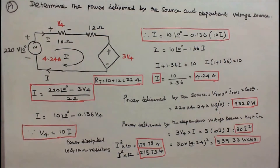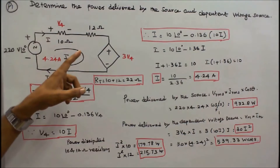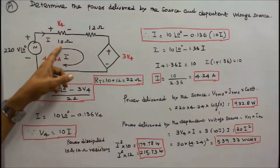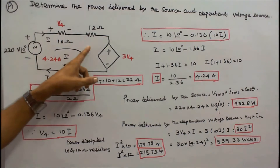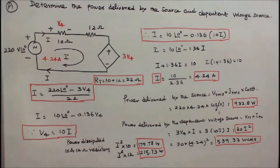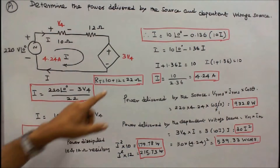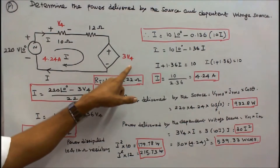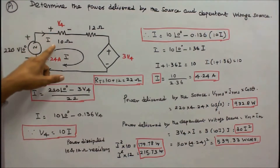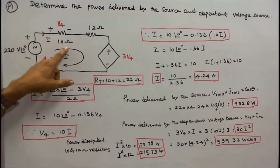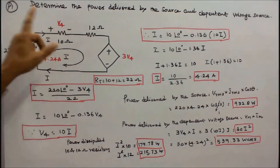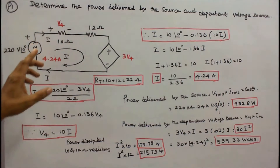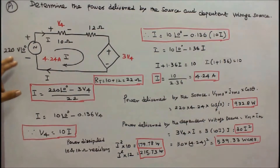The circuit consists of two resistors: one is 10 ohm and one is 12 ohm, which are connected in series. The dependent voltage source is 3 times V4, where V4 is the voltage across the 10 ohm resistor. 220 is the RMS voltage.